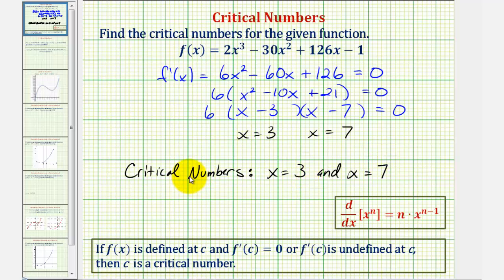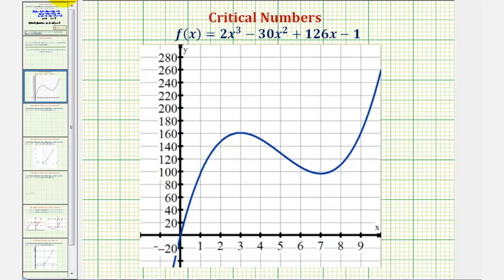Let's analyze the graph at these critical numbers. Notice here at x equals three we have a high point, and therefore we have a relative maximum, which looks like it's about 160. Notice how it's a relative maximum because there are larger function values over here on the right.